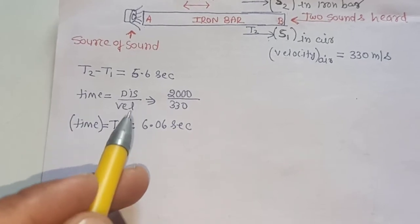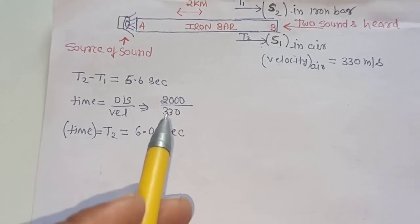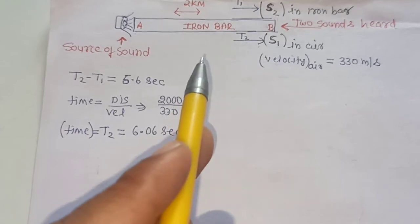We use here the formula: time equals distance upon velocity. And distance is 2000 meters.